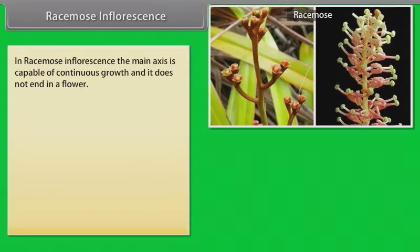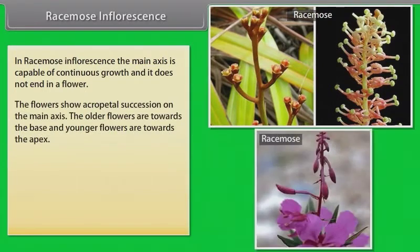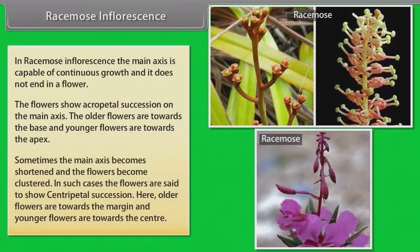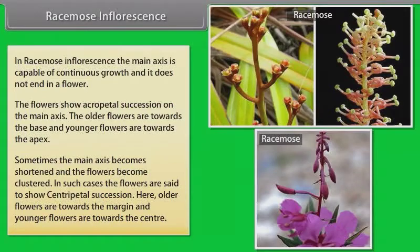In racemose inflorescence, the main axis is capable of continuous growth and it does not end in a flower. The flowers show acropetal succession on the main axis; older flowers are towards the base and younger flowers are towards the apex. Sometimes the main axis becomes shortened and the flowers become clustered, showing centripetal succession, where older flowers are towards the margin and younger flowers are towards the center.